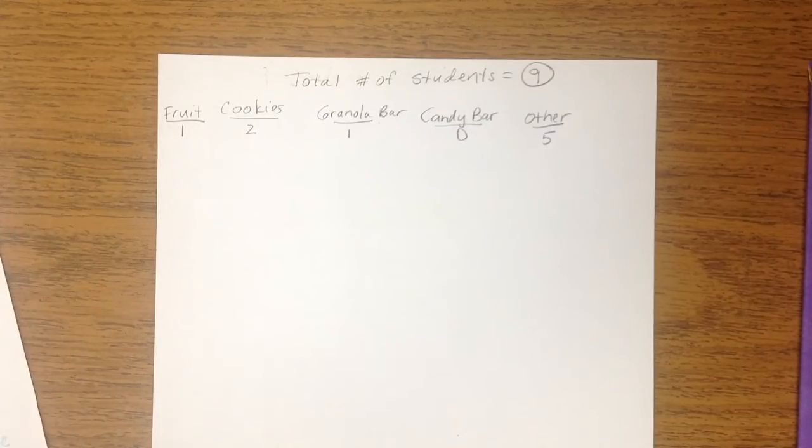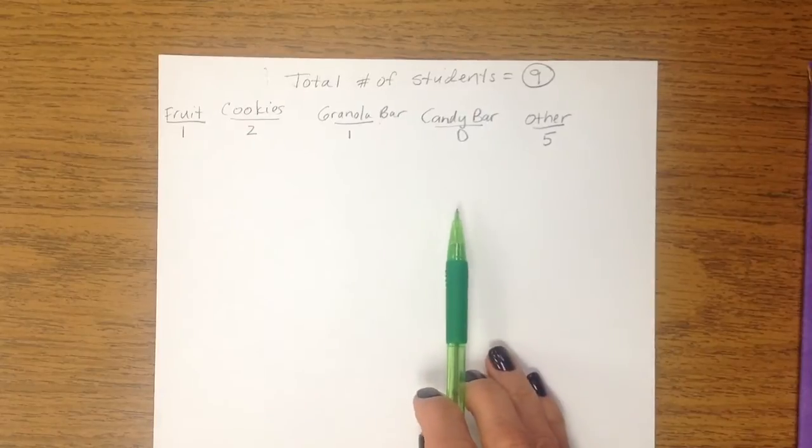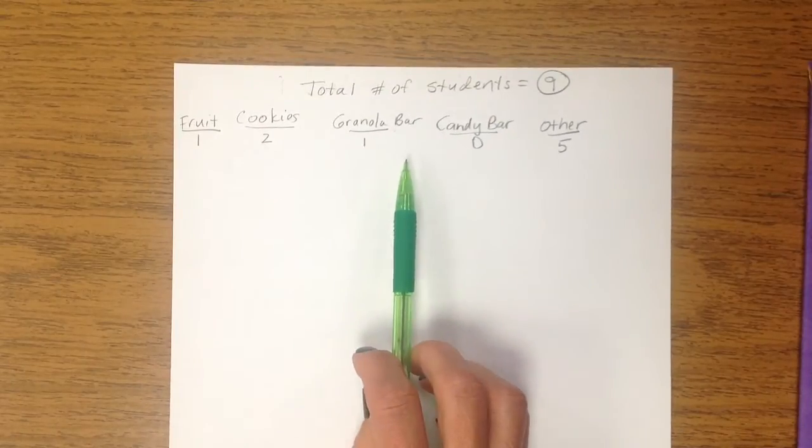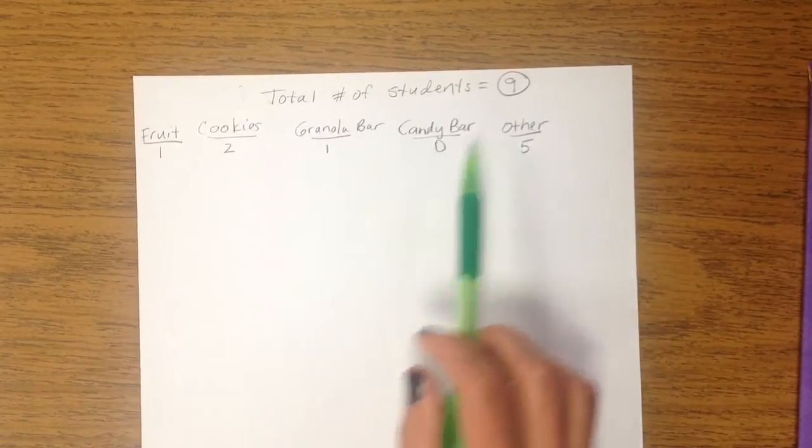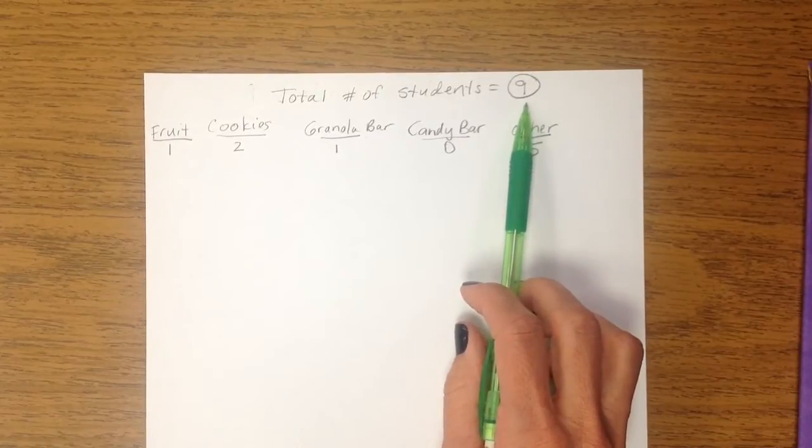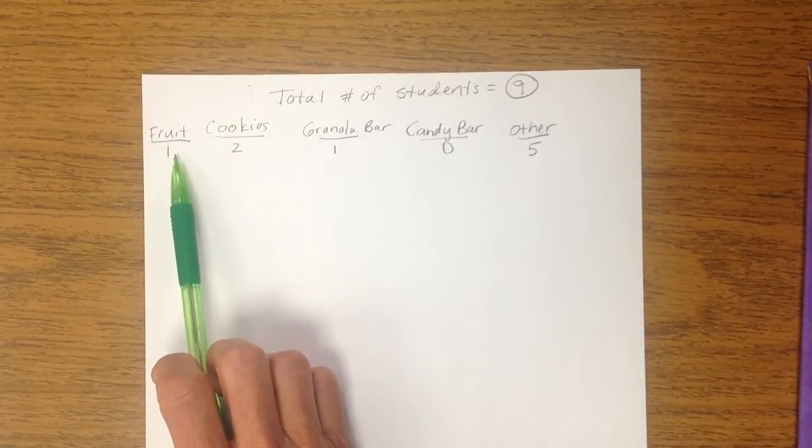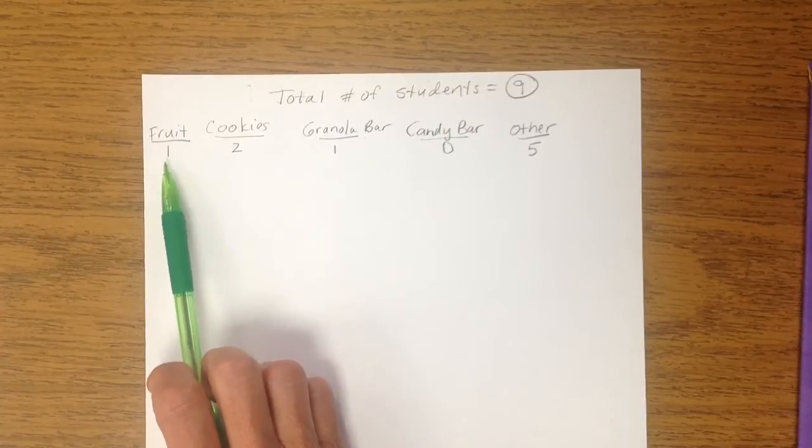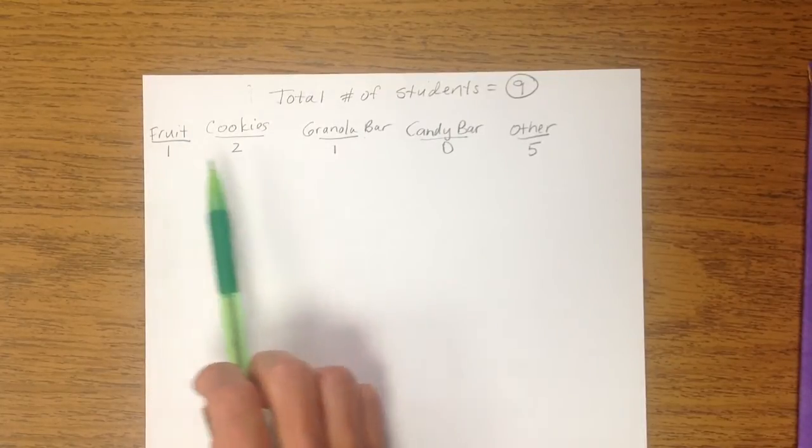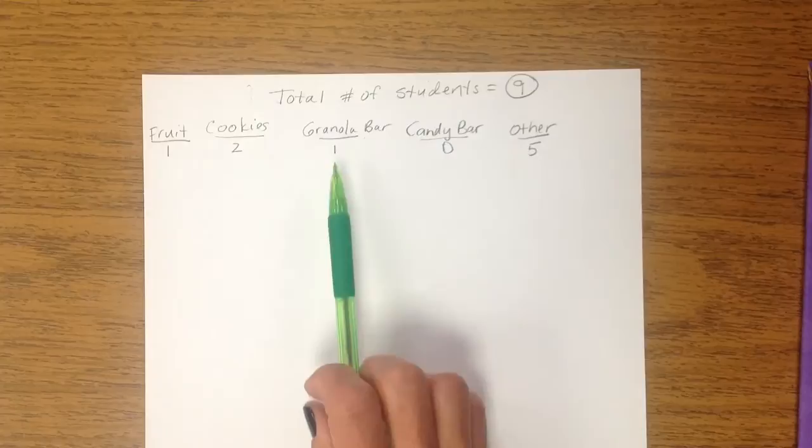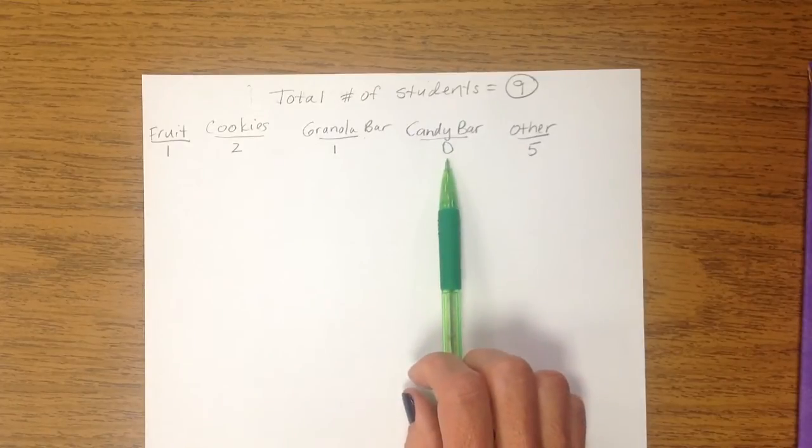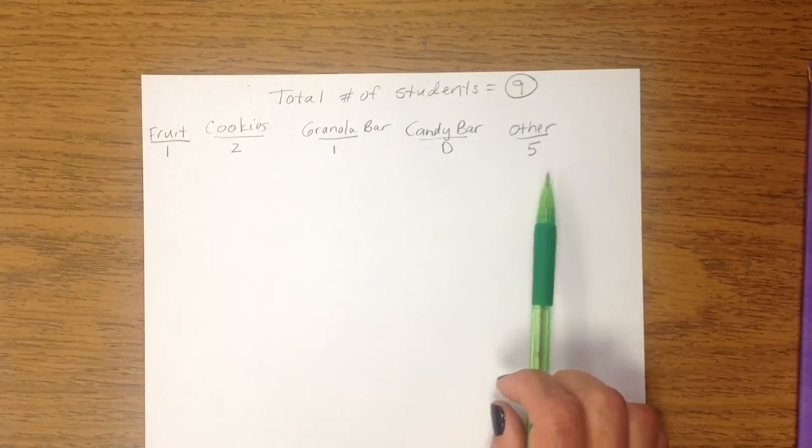So the first thing we're going to do is, I took the information from class on Monday, and we were looking at, out of the nine students that were in math class that day, in terms of snacks, what were the favorite snacks? We had one person liked fruit, two people liked cookies, one person liked granola bar, no one chose candy bar, which I'm happy about, and five chose some other kind of snack.